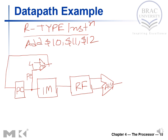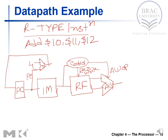We need a control unit. There is a link going from instruction memory to control, and control sends one signal to the register file — let's call it register write — and one to the ALU, which we'll call ALU operation.